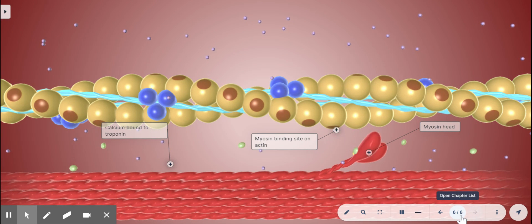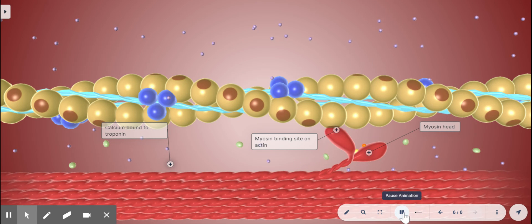After the power stroke, the actin-myosin crossbridge remains intact until an ATP molecule binds to the myosin head. And after ATP attaches to the myosin, the myosin detaches from the actin.